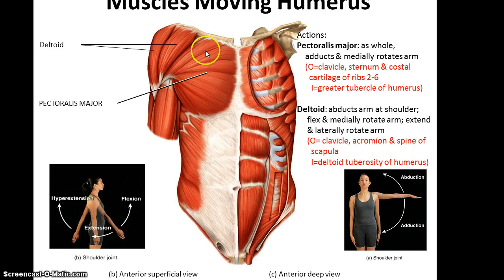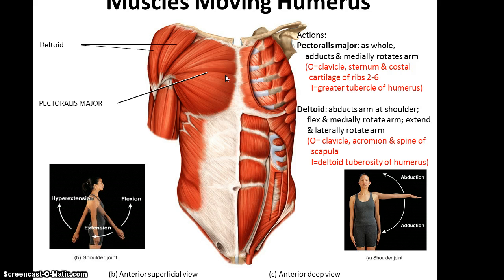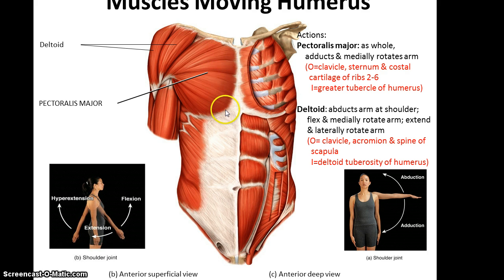It's worth pointing out that the deltoid is a rather broad muscle, and the reason it can engage in so many different activities is because different parts of it can contract separately. Then we have the pectoralis major, which is basically the front of the chest. As a whole, it can adduct and medially rotate the humerus. Its origin runs along the clavicle, the sternum, and the costal cartilages of ribs two through six, and its insertion is the greater tubercle of the humerus.